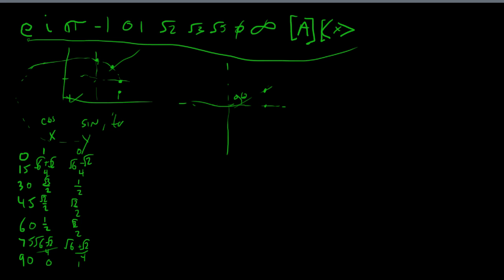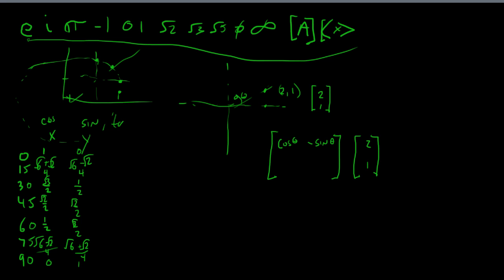We do it with a linear transformation — a rotation matrix. First, we remember that the coordinates in math are 2, 1. In real math, we deal with that as a vector: 2 in the x and 1 in the y. We now transform that by a rotation matrix, which looks like this: cosine of theta, minus sine of theta, sine of theta, cosine of theta.